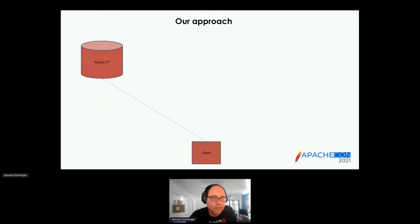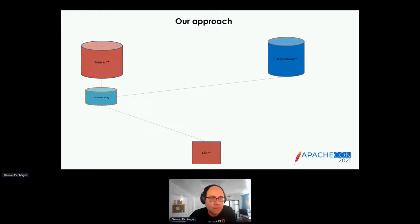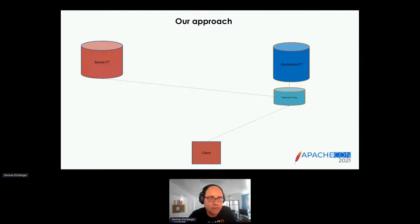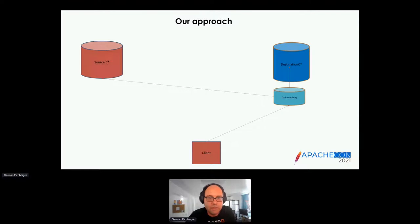Here's the migration flow: clients write to the source Cassandra, then you put the proxy in place, which takes requests and writes to both source and destination Cassandra. You use Spark or another technology to move historic data over. Many customers then switch the proxy so the destination becomes the primary and the source becomes secondary, keeping both in sync in case they need to roll back. Once they're confident, they remove the proxy and write directly to the destination.